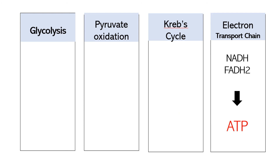NADH and FADH2 produced from the Krebs cycle are used in the last biochemical process: the electron transport chain, or oxidative phosphorylation. This process also occurs in the mitochondria. The goal of this process is to produce ATP from NADH and FADH2.